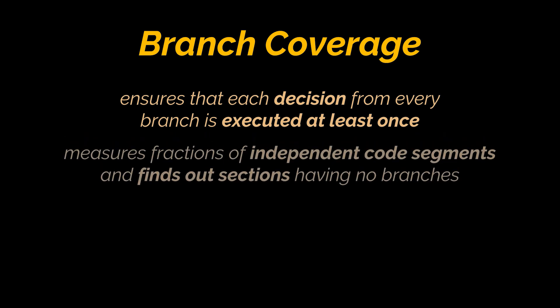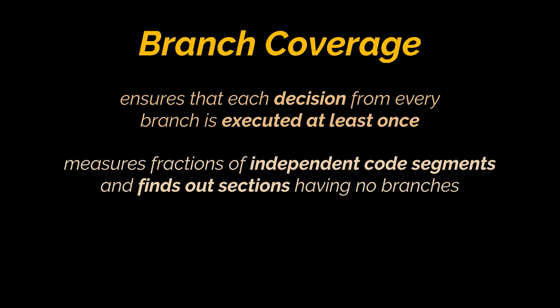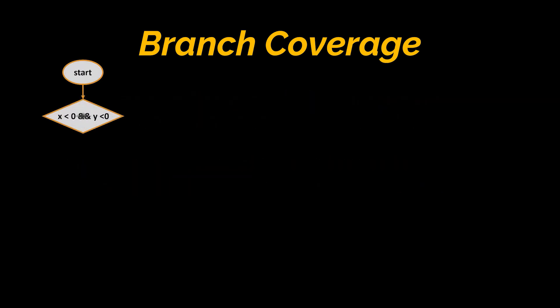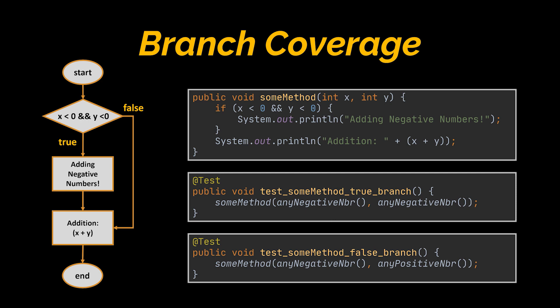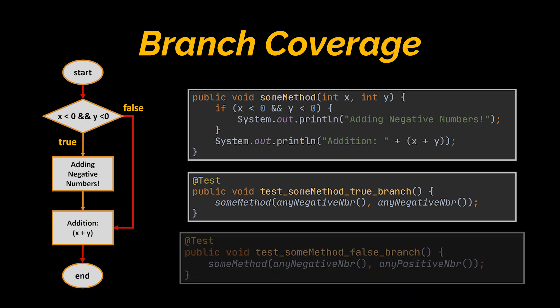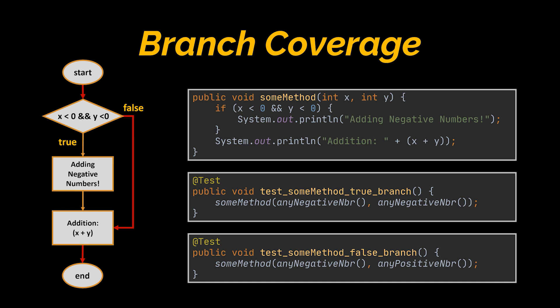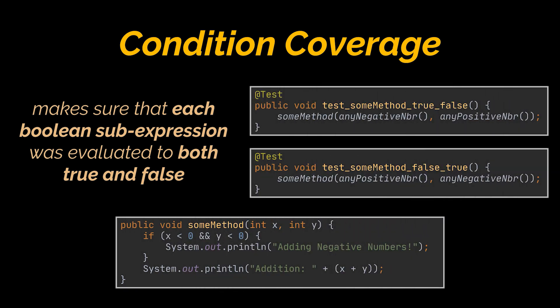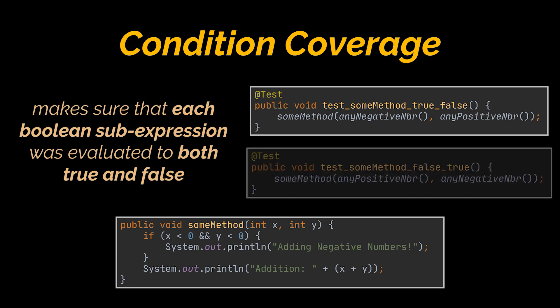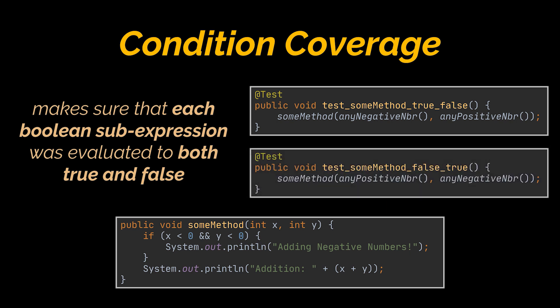Branch coverage ensures that each decision from every branch is executed at least once. It helps measure fractions of independent code segments and finds sections with no branches. The method can be represented using a diagram, and all branches are satisfied by invoking the method with specific parameters — in the first case both if-conditions are met and both System.out calls are executed, while in the second case the first condition is not satisfied. Finally, condition coverage makes sure each boolean sub-expression was evaluated to both true and false. To satisfy 100% condition coverage, in one call the first condition is true and the second false, and in another the first is false and the second true.